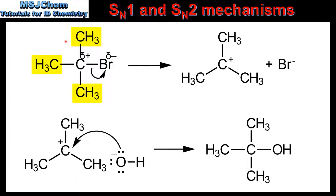Another important point is the presence of the three methyl groups in the tertiary halogenoalkane. These bulky alkyl groups cause steric hindrance. This steric hindrance prevents the nucleophile from attacking on the opposite side to the leaving group, as we will see in the SN2 mechanism.